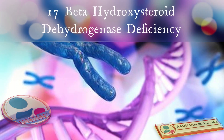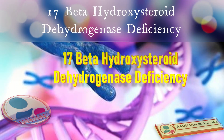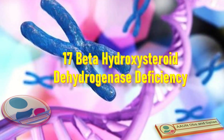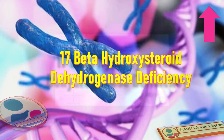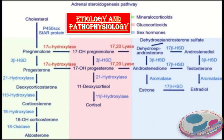Bismillahirrahmanirrahim. Today we will talk about 17-beta-hydroxysteroid dehydrogenase deficiency. We have already discussed some other disorders of sex development like Turner syndrome, Savite syndrome, 5-alpha reductase deficiency, and you can find their links in the 'i' button in the top right corner of this video. Let us talk about the etiology and pathophysiology of this disorder.